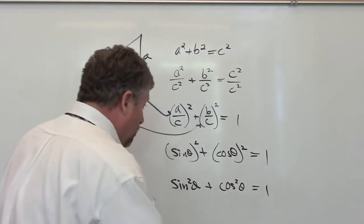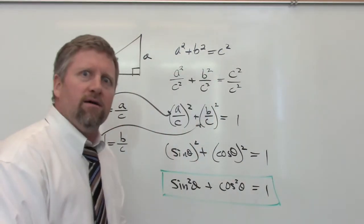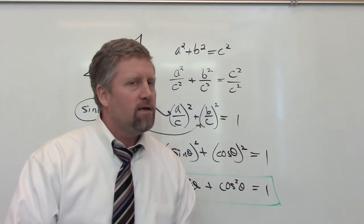So, lo and behold, what a great phrase that is, lo and behold, we have a new formula. Sine squared plus cosine squared equals 1.